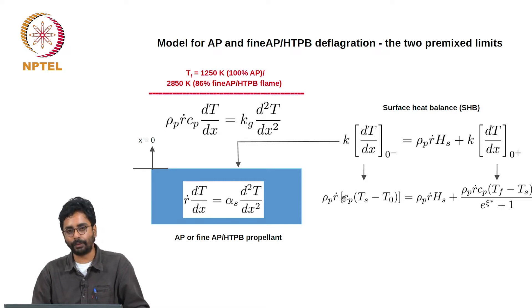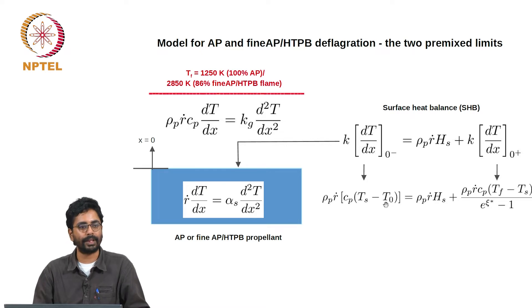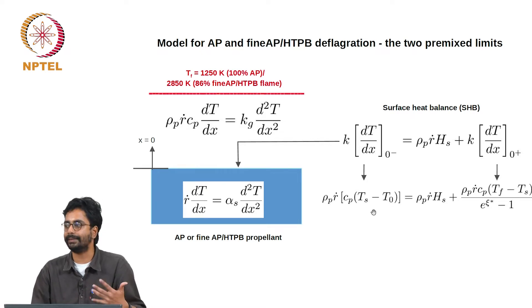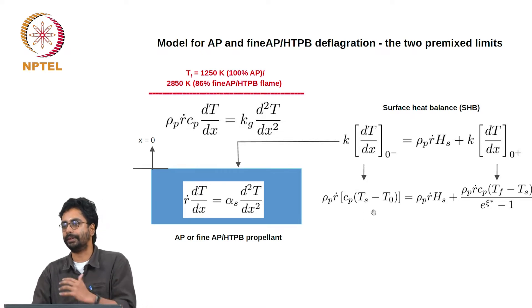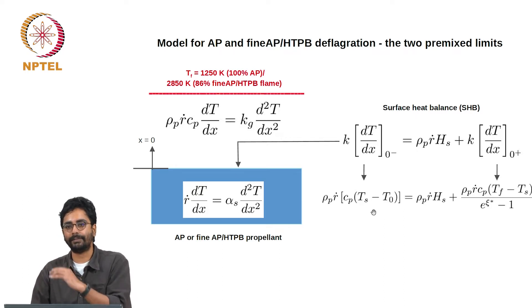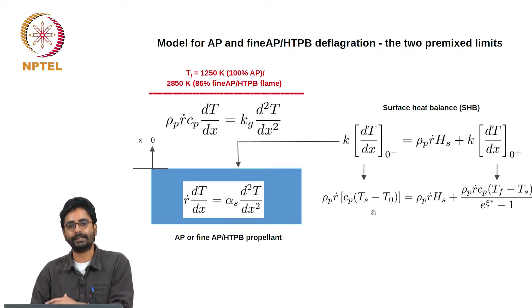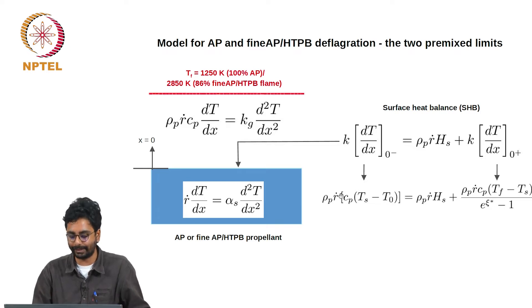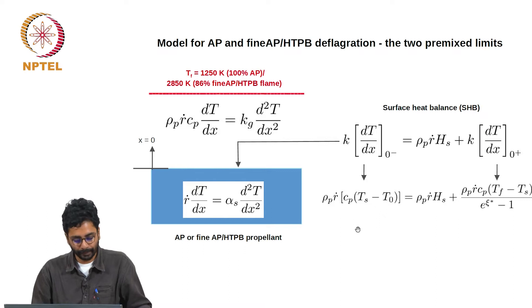We could have written this even without having to solve the equation. This is simply the heat that is required to raise the temperature of a burning propellant at a rate of r_dot for its temperature to be increased from T_0 to T_s. This is just m_dot * c_p * (T_s - T_0).